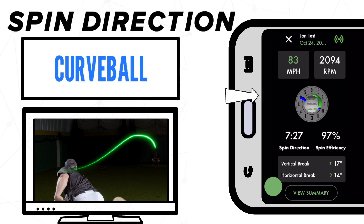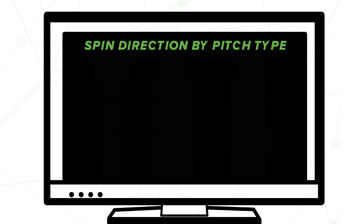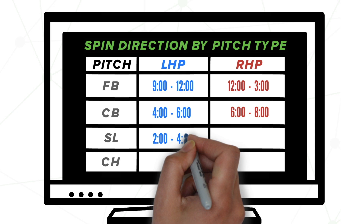Now that you have a general understanding of what spin direction is, here's a list of what the typical spin direction looks like for fastballs, curveballs, sliders, and change-ups for both righties and lefties.